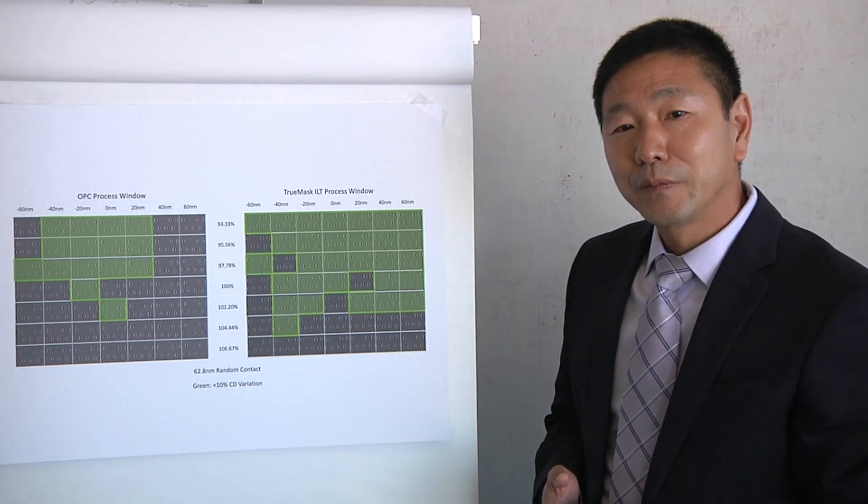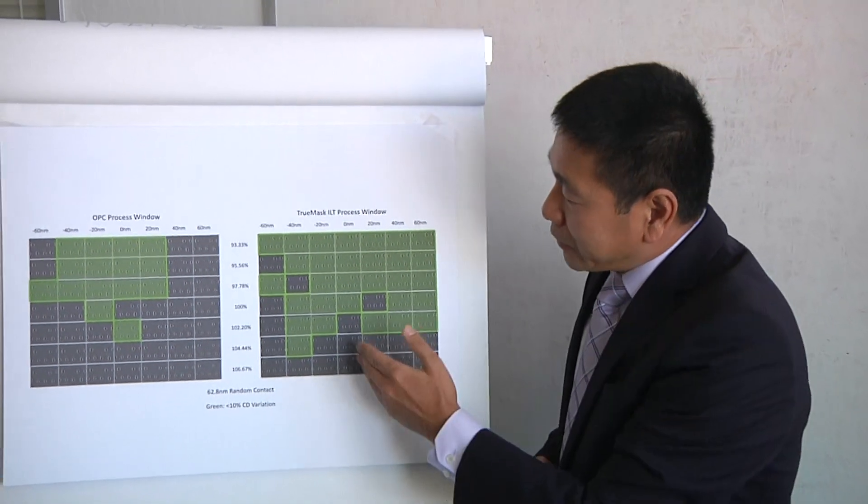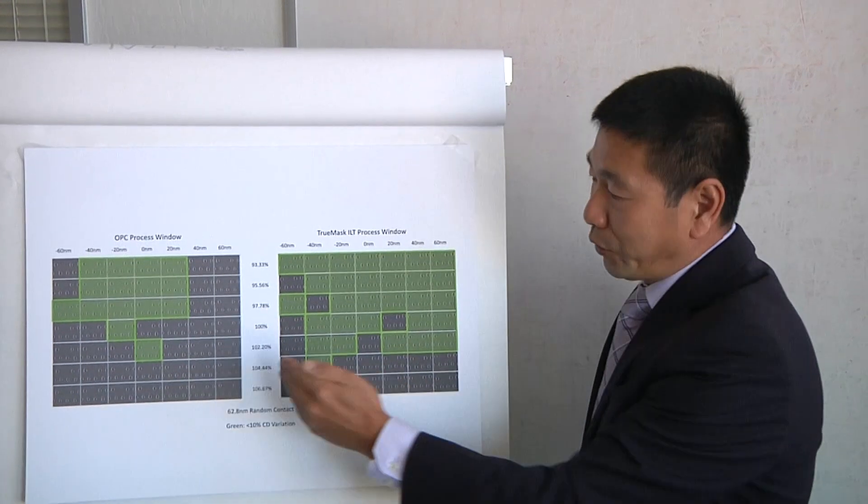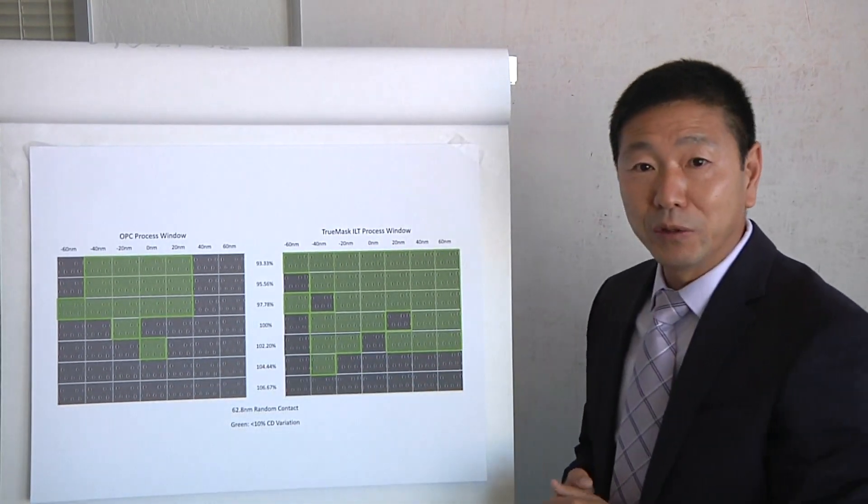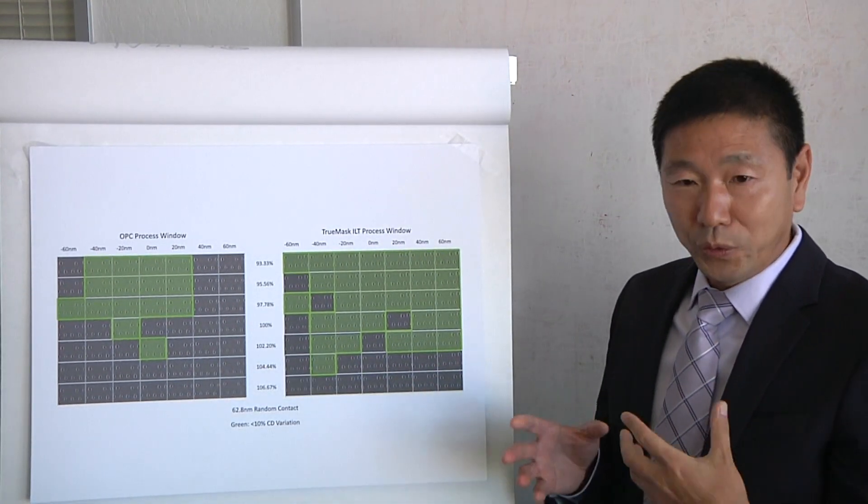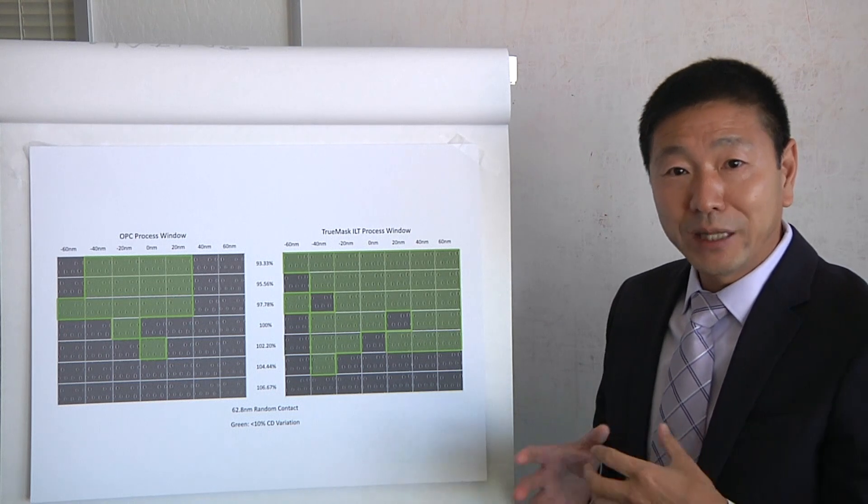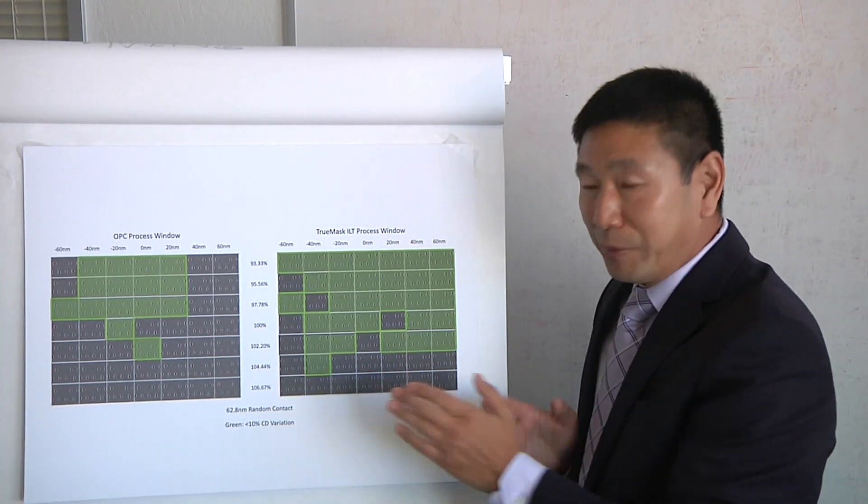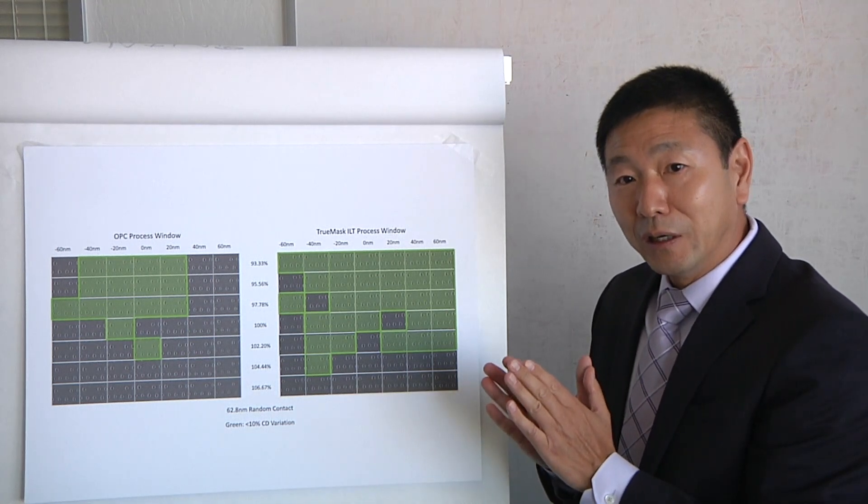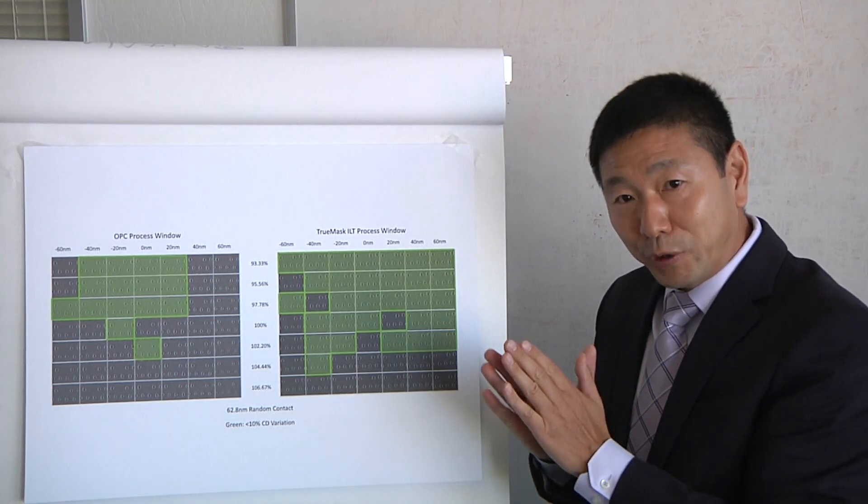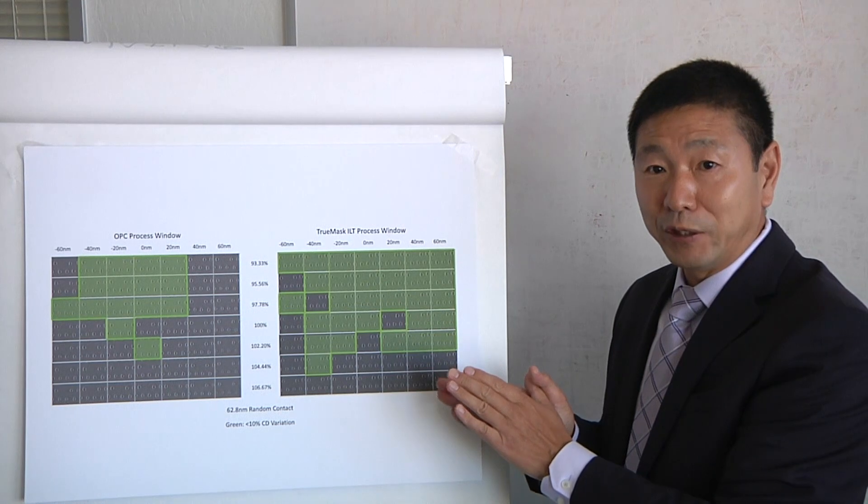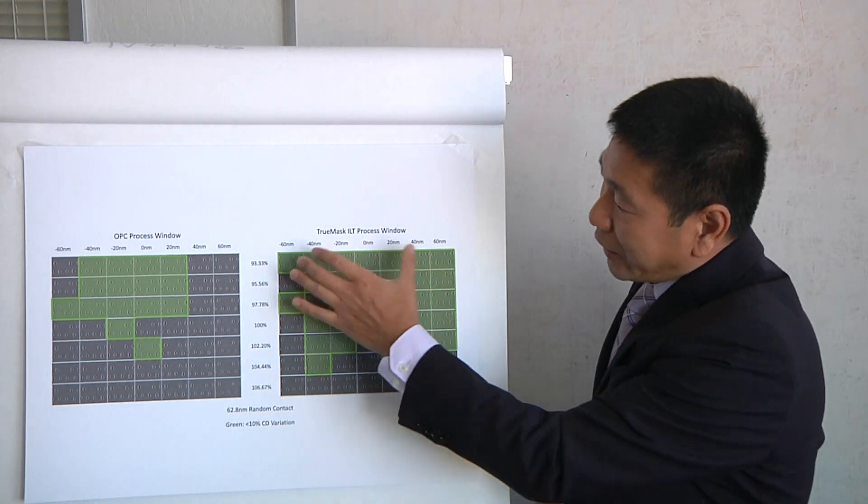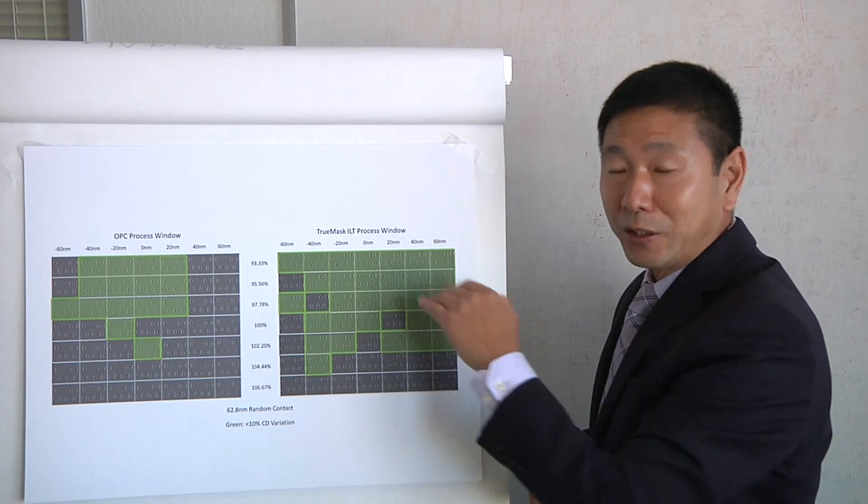How much does this impact yield? What are we talking about in terms of numbers? Oh, there is definitely a correlation between process window to yield. It's hard to get the accurate number, but in general, you want to minimize the impact of your wafer print to the process variations, because, in general, the plus minus 60% nanometer, that's what the scanner can control their focus, right?